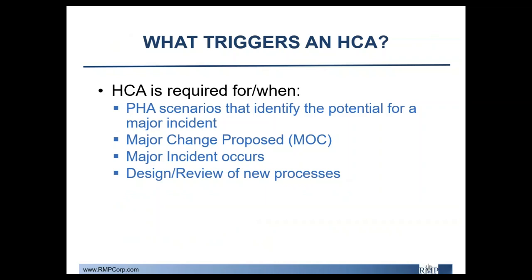An HCA is required to be performed for all PHA scenarios that identify the potential for a major incident — basically scenarios with a high health and safety risk rank such as loss of life, severe injury, or lost time injury. They're also required whenever you have a major change proposed at the facility, such as adding a new chemical, installing a non-spare vessel that increases inventory, or any change introducing the potential for more off-site impacts. An HCA is also required whenever a major incident occurs — any incident equal to or worse than a lost time injury — and during the design and review of new processes.